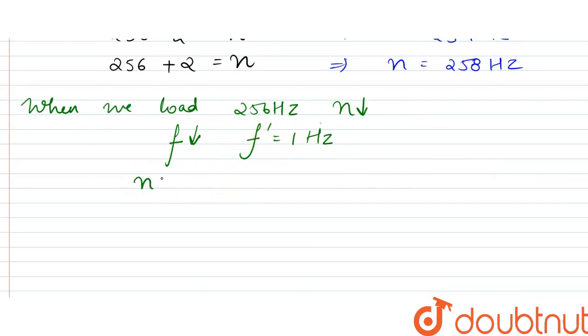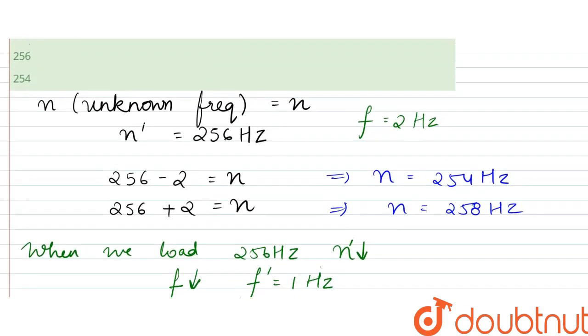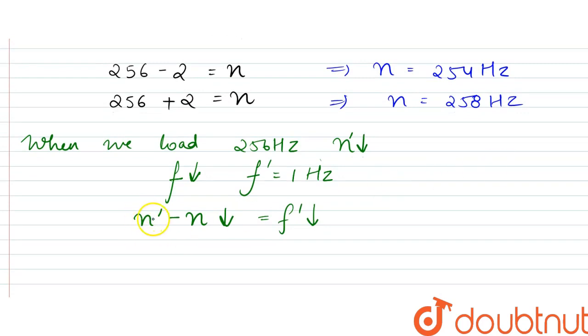Right, so n dash minus n has been decreased, right. N dash has decreased, so this term would decrease, right. This is equal to f dash itself. So if this is decreasing, that means this is also decreasing, right. So when will that happen is since n dash is also decreasing.